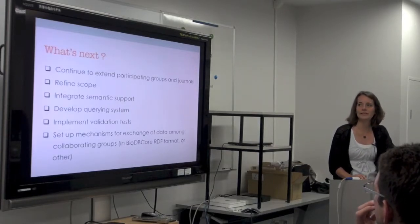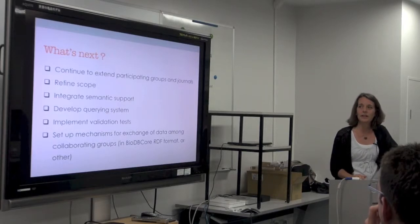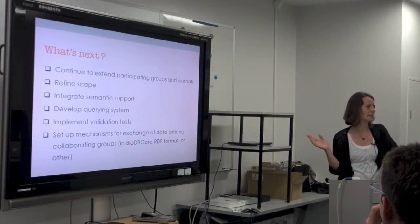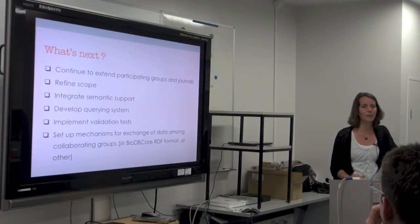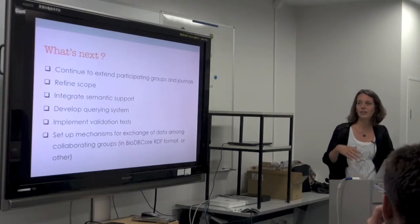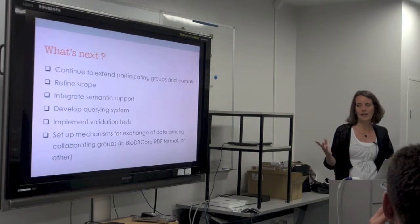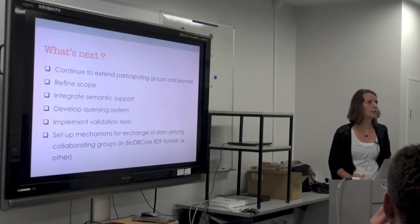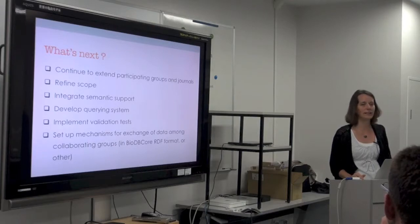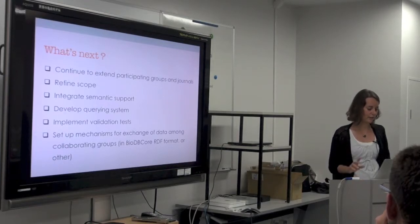What we want to do next is continue forging collaborations with people providing similar resources, refine this core because there are things that need improvement, and integrate more semantic support. Right now this is mostly in free text, and obviously if we're going to do this kind of resource in free text it doesn't serve the purpose. We'd also like to support querying systems for researchers and whoever is interested in finding resources specific to certain data types, and implement validation tests for all the information in there, and set up mechanisms for exchanging data among the different collaborating groups.